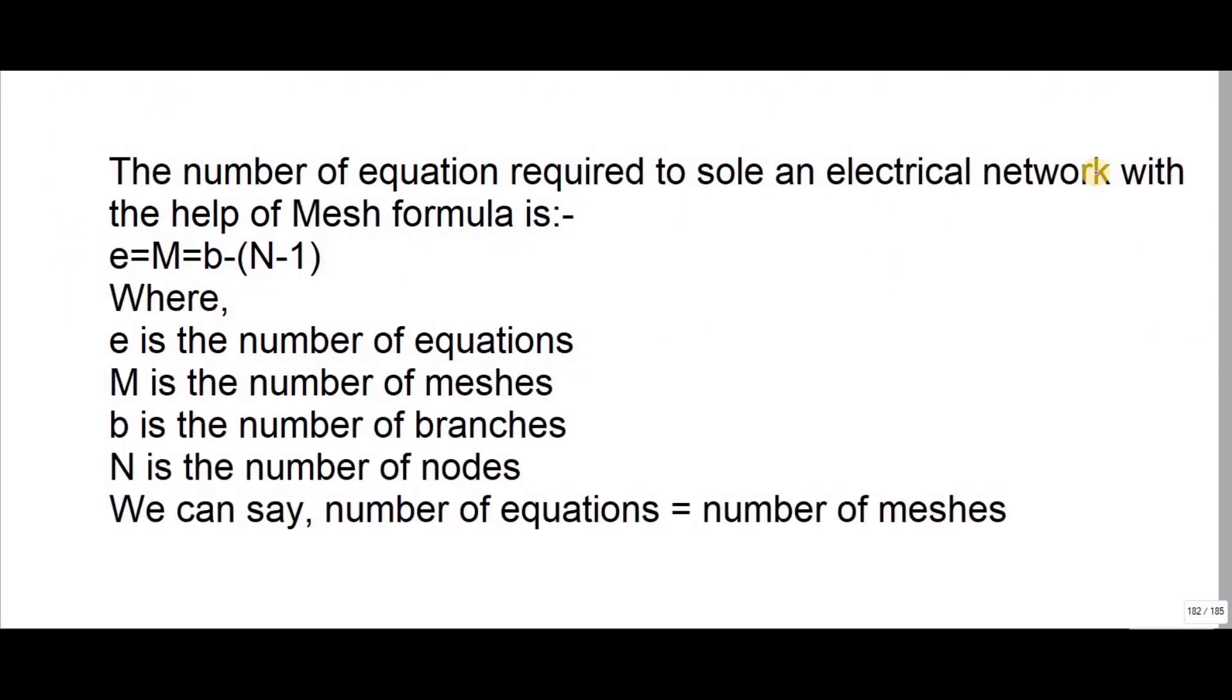The number of equations required to solve any electrical network with the help of mesh analysis: E is the number of equations which is equal to the number of meshes. The formula is M equals B minus N minus 1, where B is the number of branches and N is the number of nodes.